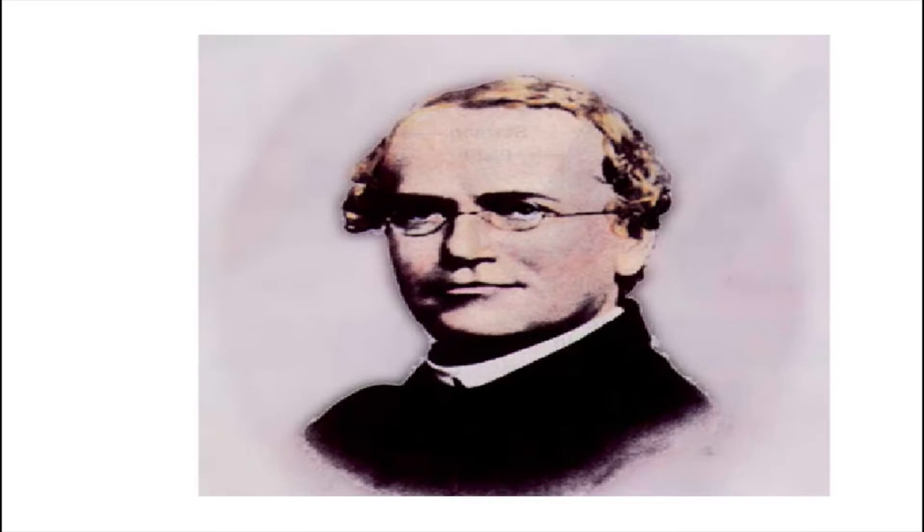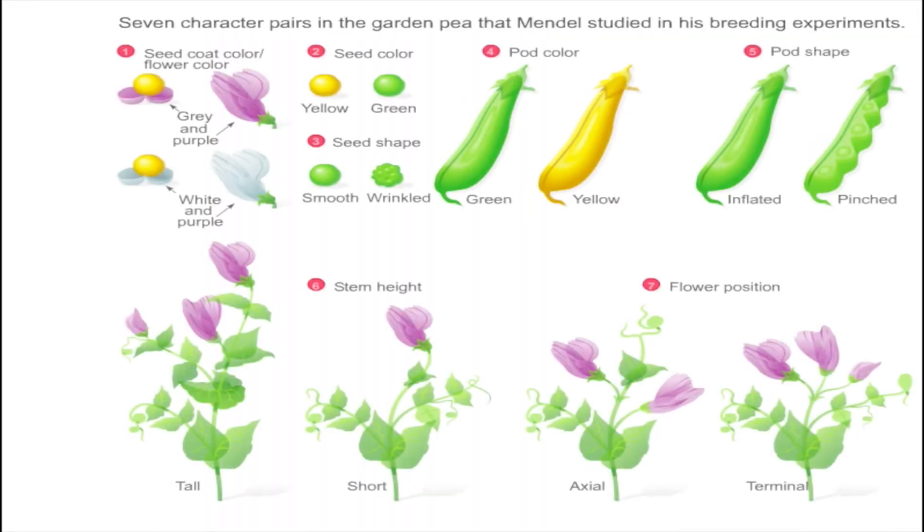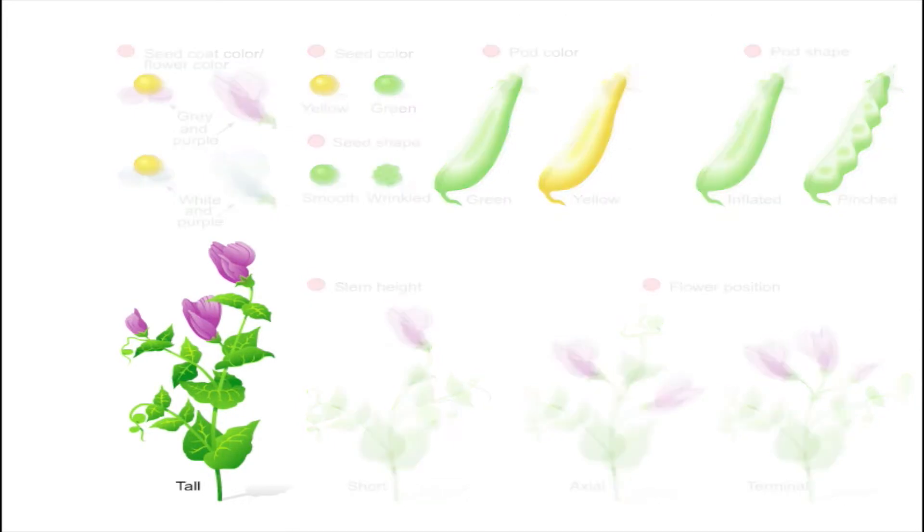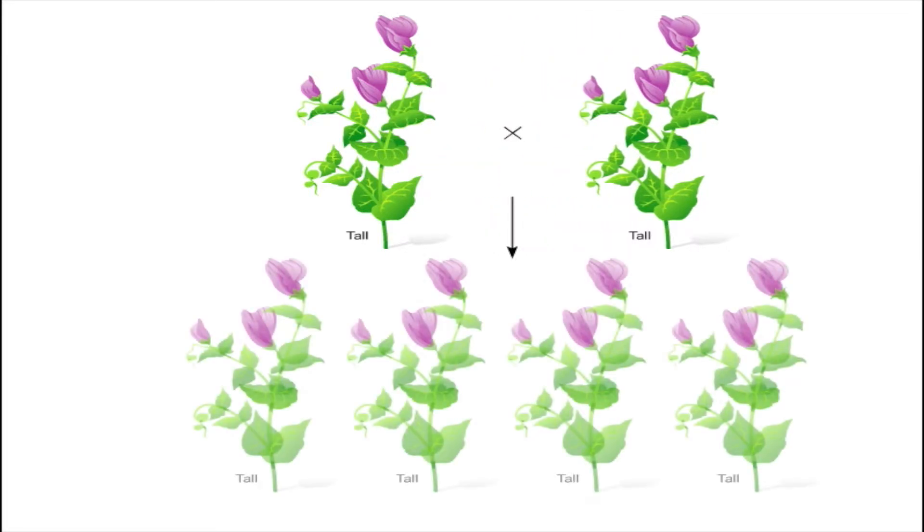Gregor Mendel is considered the father of classical genetics, the study of heredity. Mendel studied inheritance patterns in the pea plant. In his experiments, he used true breeding plants that always produced the same traits when self-fertilized.